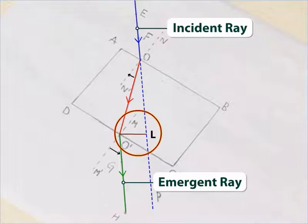Even if the angle of incidence is changed, the emergent ray will always be parallel to the incident ray direction. The only change will be the lateral shift.